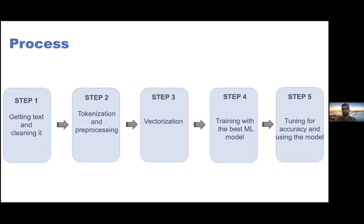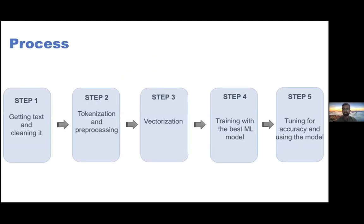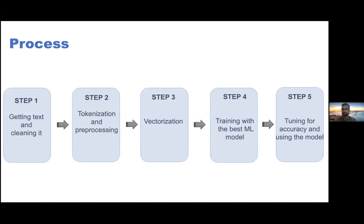Step four is training with the best machine learning model. Once you have the data cleaned and prepped, you select the best model. There is no single best machine learning model for every purpose or use case. What we usually do is try out different models and see which one performs best. After that, we tune that model for accuracy and start using it. This is a rough idea of how any supervised machine learning model pipeline looks.